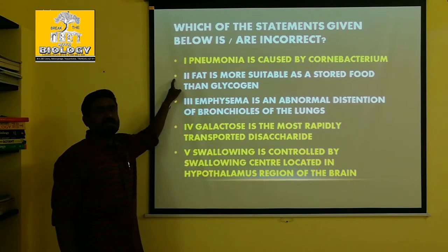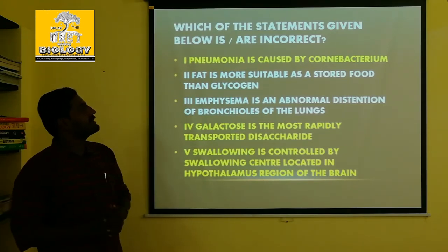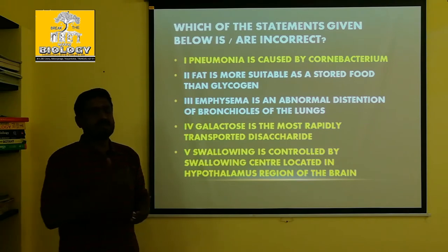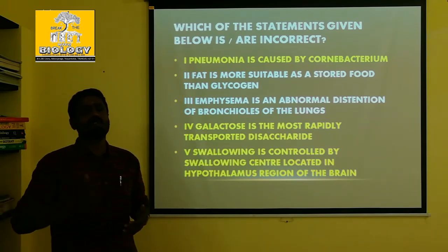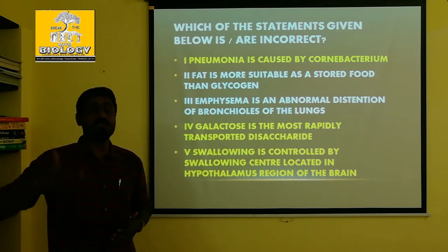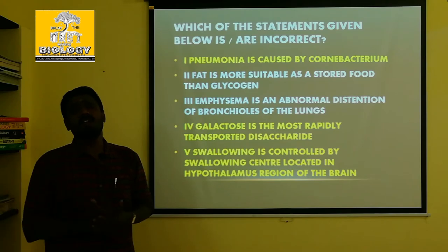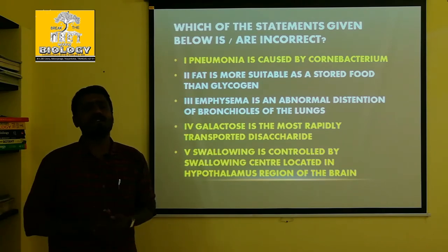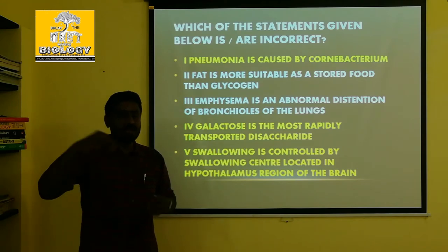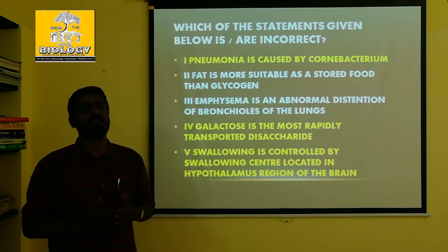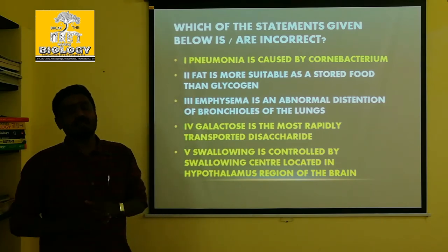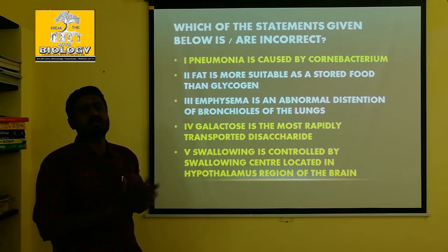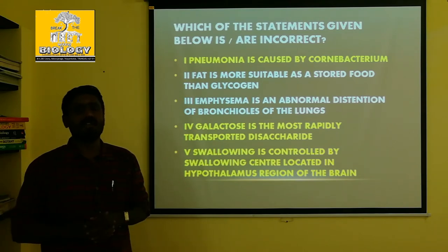Second point: fat is more suitable as a stored food than glycogen. If we are eating carbohydrates, the carbohydrates will be converted into glycogen. If we are eating fat directly, it is converted into fatty acids, and the fatty acids will be stored in the cells. So there are two sources of fat stored in the body.